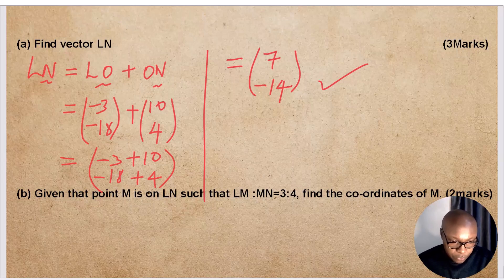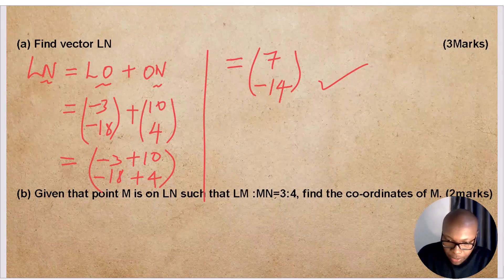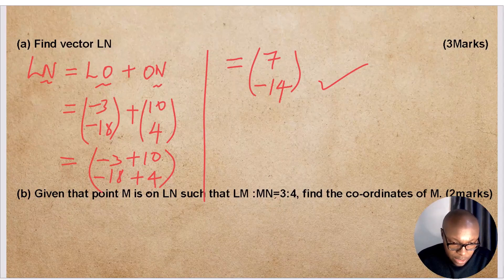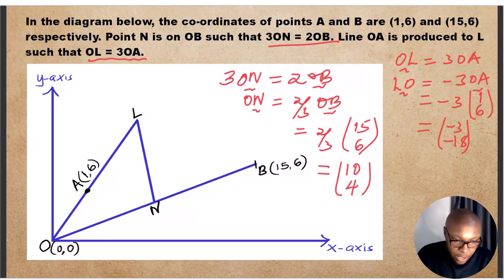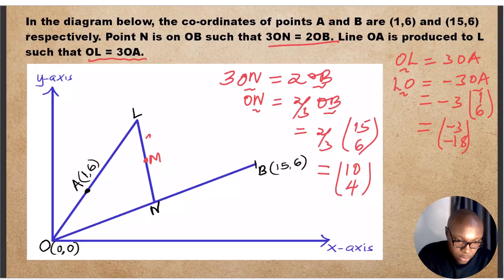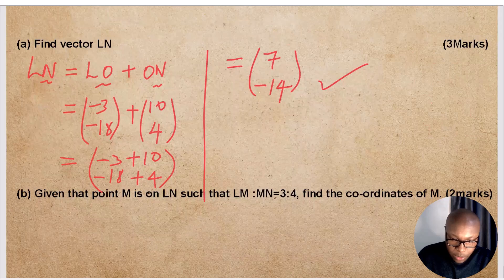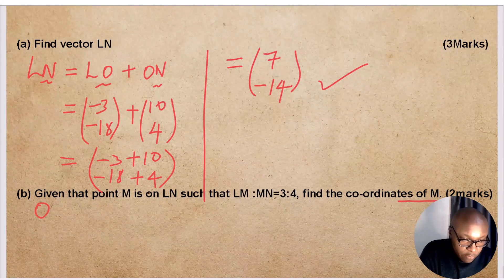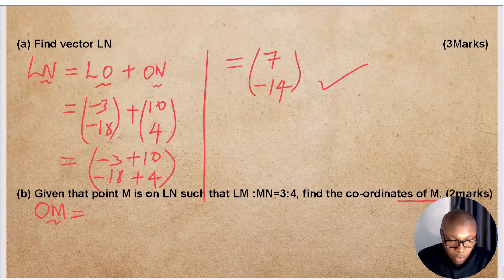We go to Part B. Given that point M is on LN such that LM to MN is 3 to 4, find the coordinates of M. To find the coordinates of M, we simply need to find vector OM — the position vector of M. When we find OM, we get the coordinates of M.